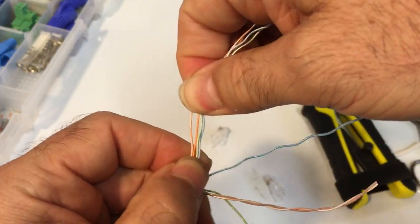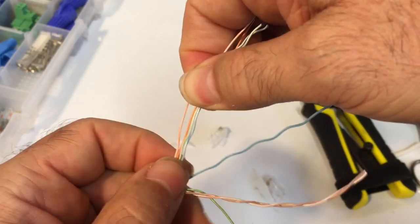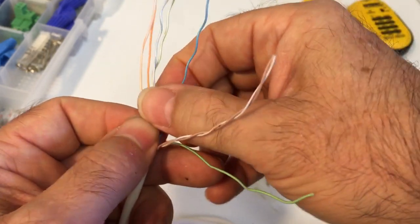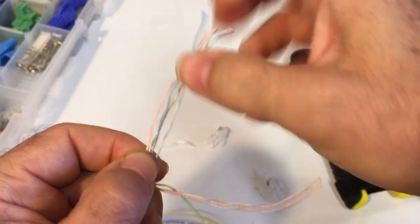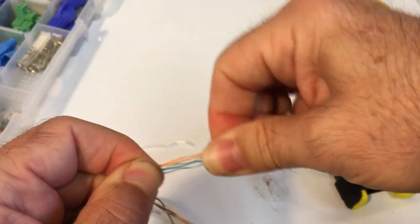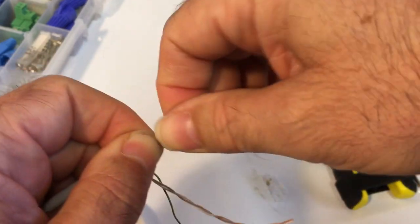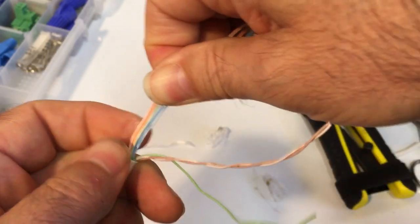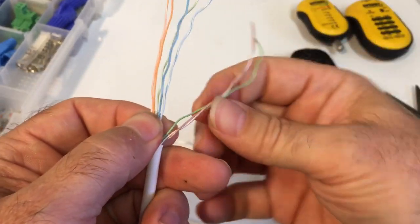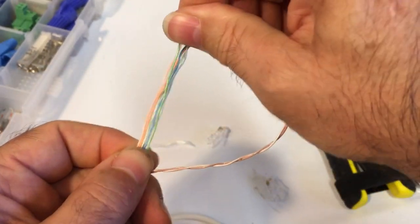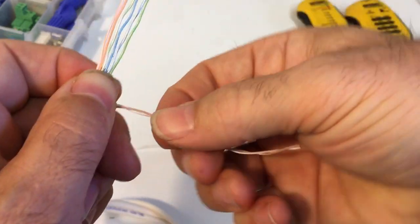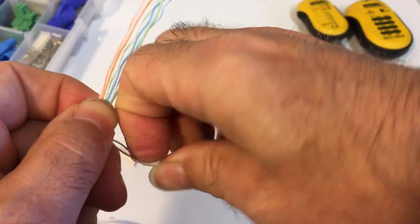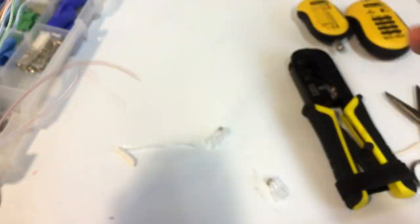Alright, so we've got white-orange, orange, white-green. Then I've got solid blue right here, and then I've got the white-blue. And as I do this, I kind of tend to pull on them and bend them. It helps kind of massage them into place. Then I want to have the solid green. And then lastly is my brown pair. And I'll want to do white-brown and then solid brown.